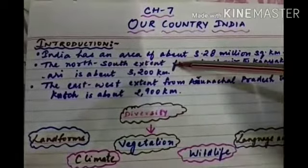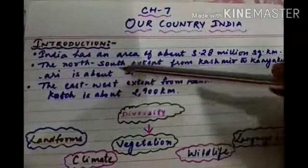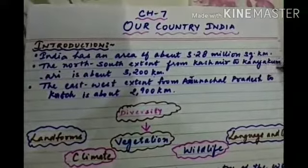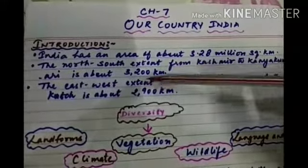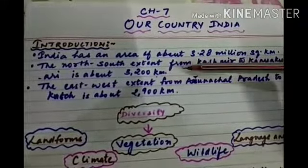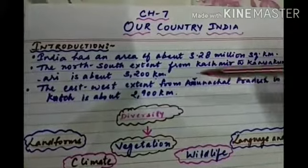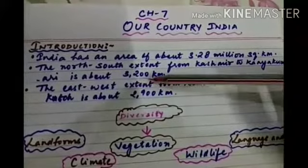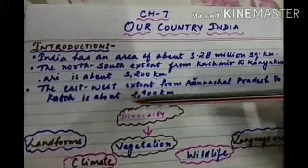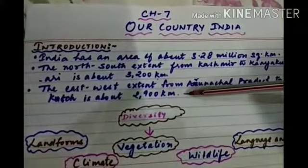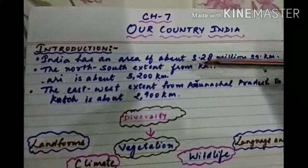India has an area of about 3.28 million square kilometers. The north-south extent from Kashmir to Kanyakumari is about 3200 kilometers, as you can see in the map of India. The east-west extent from Arunachal Pradesh to Kach is about 2900 kilometers. This is a little bit about our India.